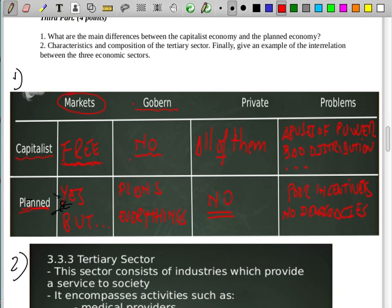The capitalist economy, all activities are private. But in planned economy, there aren't private activities, only are state activities or social activities. Finally, if we think about problems, in capitalist economies there are a lot of problems for abuses of power, bad distribution of resources, or high unemployment. In the planned economy, there are too many activities, and really there aren't free democracies.